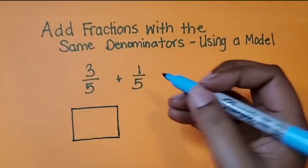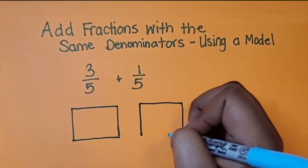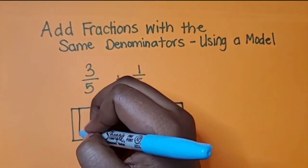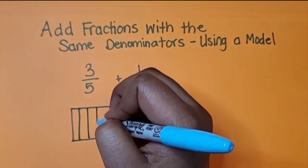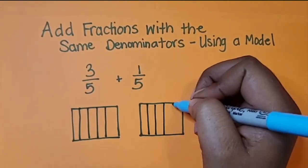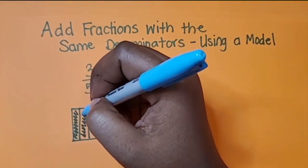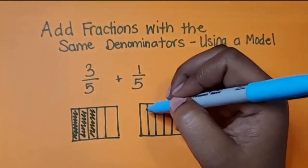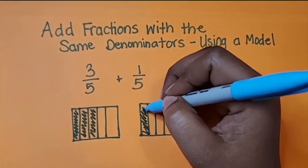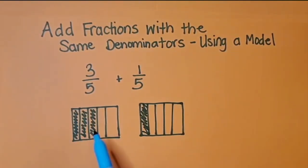We're going to draw 3 fifths here and draw 1 fifth here. Section both of our wholes into fifths. Shade in 3 fifths on this whole. We're going to shade in 1 fifth because they have the same denominator. Their parts are the same size so we can join them together.